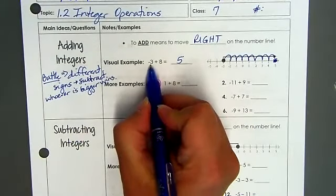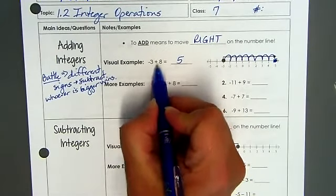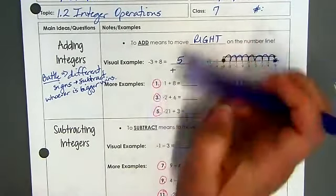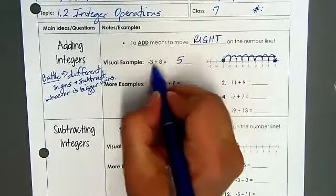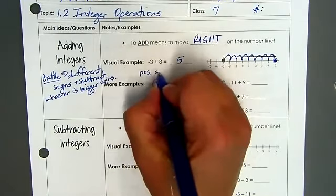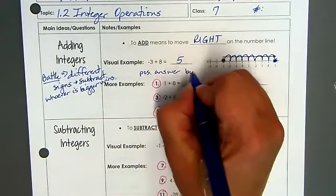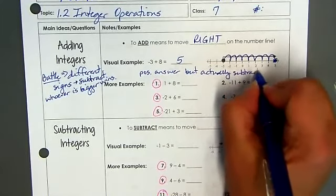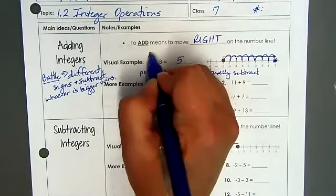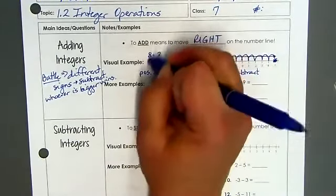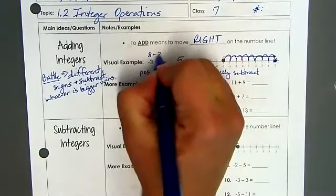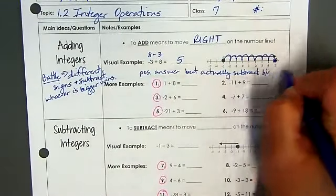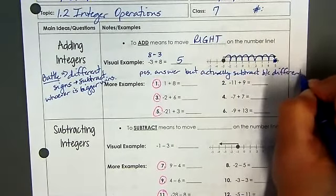So in this scenario, we've got -3 and +8. Who's winning? The 8. So therefore, I know that my answer is going to be positive. But I'm going to subtract because there are different signs. So we have a positive answer but actually subtract to get it. Because I'm going to do 8 minus 3, which is going to give me 5, because they are different signs. Positive answer, but actually subtract because different signs.